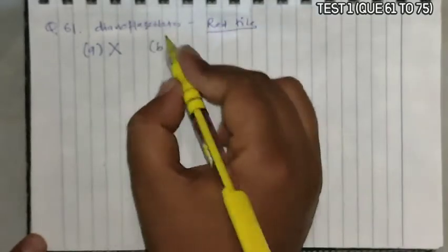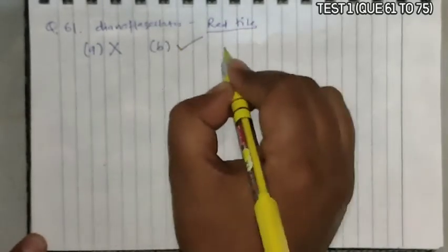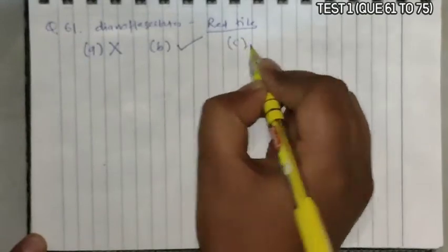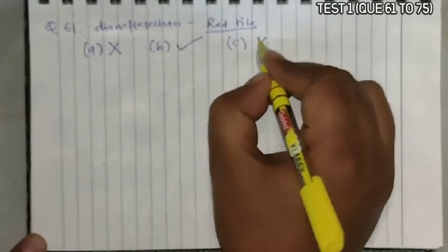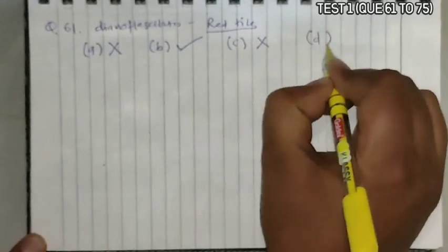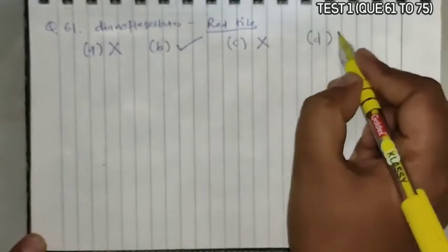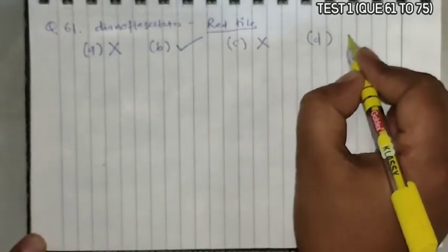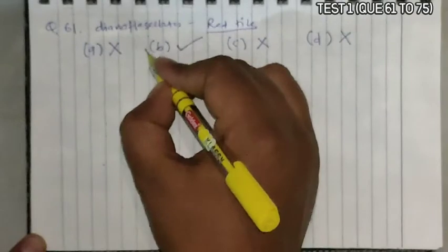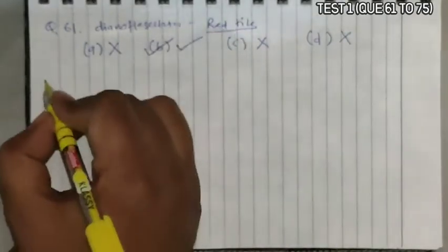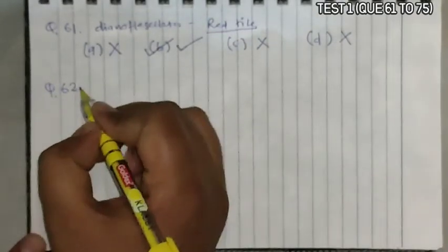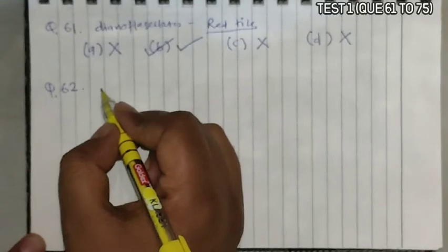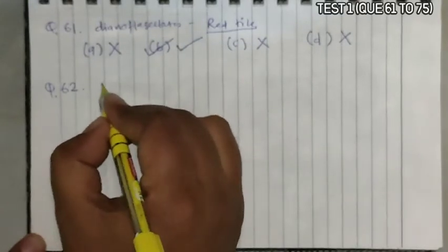Option B is Gonyaulax, which is a dinoflagellate, so this is the correct answer. Option C is Mycoplasma — it is a bacteria, so it cannot be the answer. Option D is Archaebacteria, which is also a bacteria, so that cannot be the answer. The correct answer is option B.